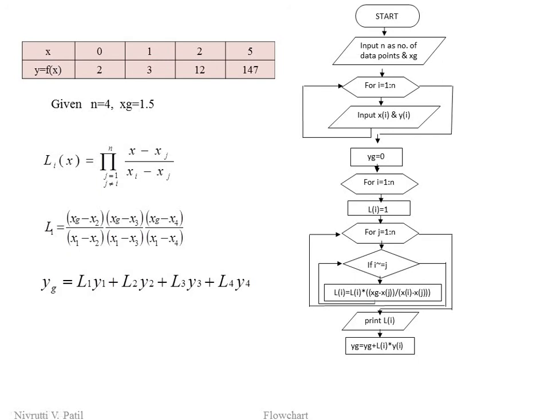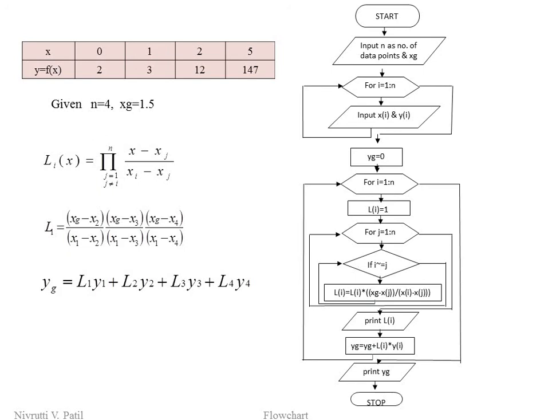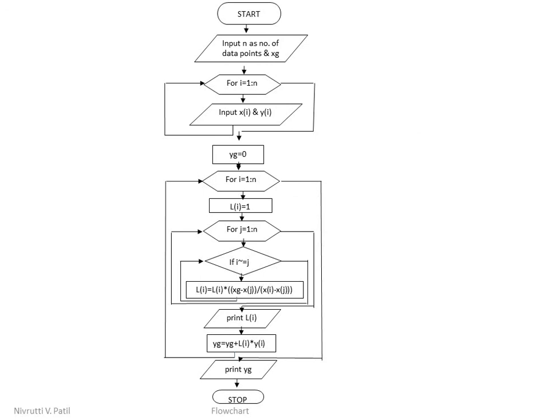The result is assigned back to yg, and when i increments to 2, we get l1·y1 + l2·y2, and so on up to the last term. When the yg calculation is finished, the i loop also finishes. We then print the value of yg using the parallelogram symbol, and the flowchart stops. This is the detailed flowchart of Lagrange's interpolation method to calculate the value of y at a given value of x.